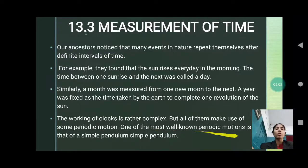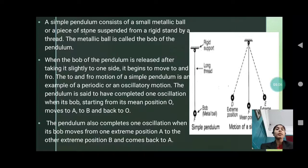Here is a pendulum. The rigid support is there. This is a long thread. This is a bob - suppose a ball like structure, a metal ball, which we have tied at the bottom. So, this whole is a simple pendulum. Now we will move it from the middle position to the next position. A simple pendulum consists of small metallic ball or a piece of stone suspended from a rigid stand by a thread. The metallic ball is called the bob of the pendulum.